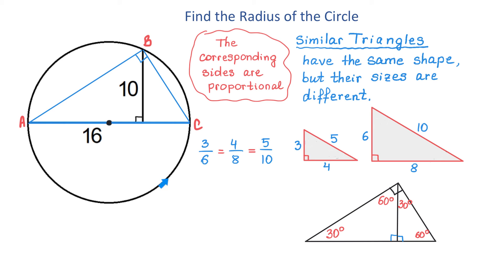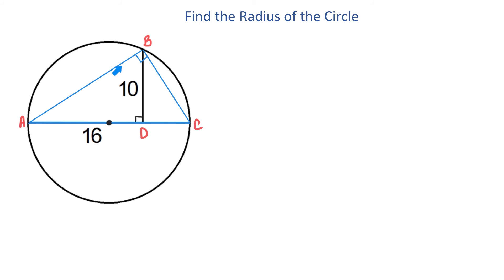Now we will use this principle to solve the given problem. First, let's add another point here and call it point D. In the triangle to the left, the side that measures 10 units is the shortest side, and the side that measures 16 units is the middle side. In the triangle to the right, the shortest side is DC, and the middle side measures 10 units. We can form the proportion: DC divided by 10 equals 10 divided by 16.